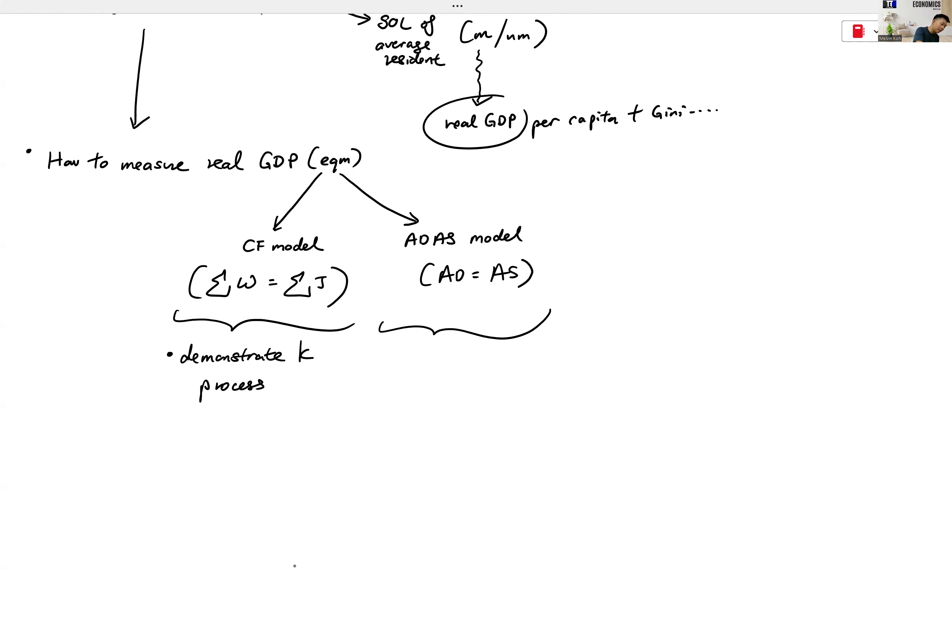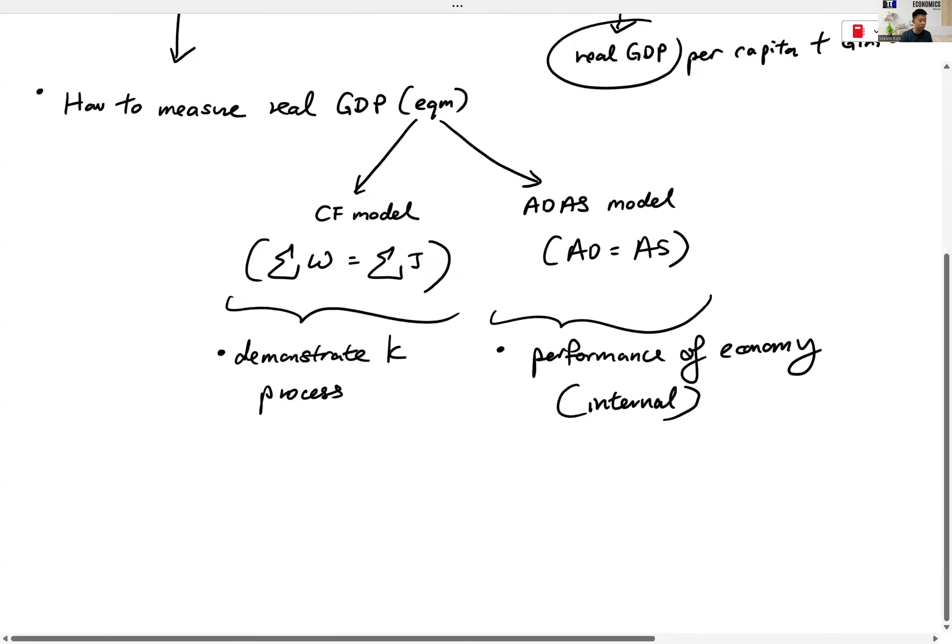So the circular flow is to demonstrate the K process. What about AD/AS model? He wanted to illustrate the performance of the economy. How it's affected and how policies work. So this is more internal performance. John Maynard Keynes is not famous just in economics lessons. If you Google, you'll find that he wrote a letter to President Roosevelt during the Great Depression. You all heard of Great Depression in US? The Great Depression ended when US started to spend a lot higher G. They call it pump priming. They hire people to dig a hole in the road, they hire another group to fill up the hole. Why? Keynes was trying to teach President Roosevelt the idea of the multiplier.